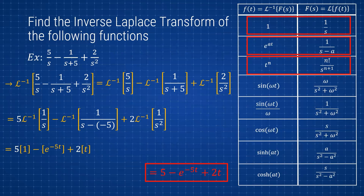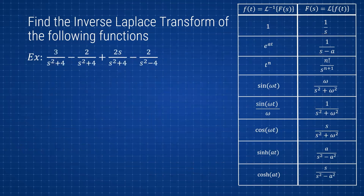Now let's look at another one. We have: 3/(s²+4) minus 2/(s²+4) plus 2s/(s²+4) minus 2/(s²−4). We have a lot of similar terms but some are distinct. The first two terms share the denominator s²+4, so we can combine them: 3 minus 2 gives us 1 over s²+4.